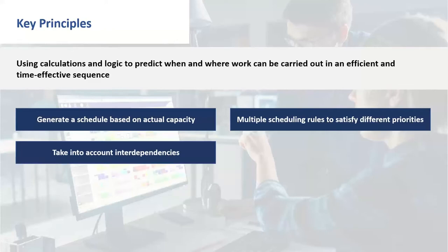The system will automatically take into account dependencies between operations within a works order — typically done sequentially, though there are options to override that. It also handles dependencies between works orders where there is a BOM structure. Within an assembly or subassembly, you can't produce the subassembly until you've manufactured all the relevant parts and works orders that make it up.